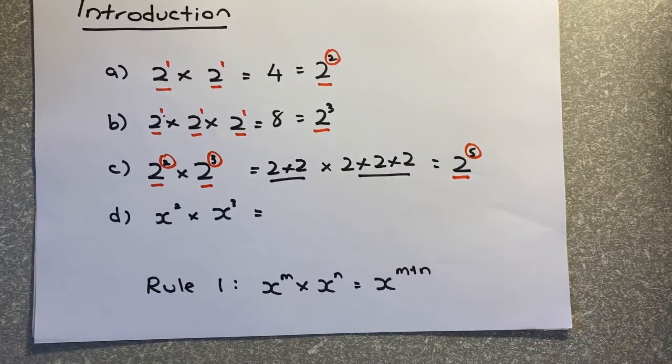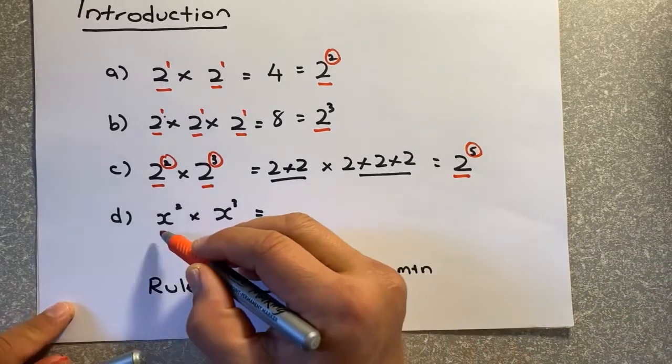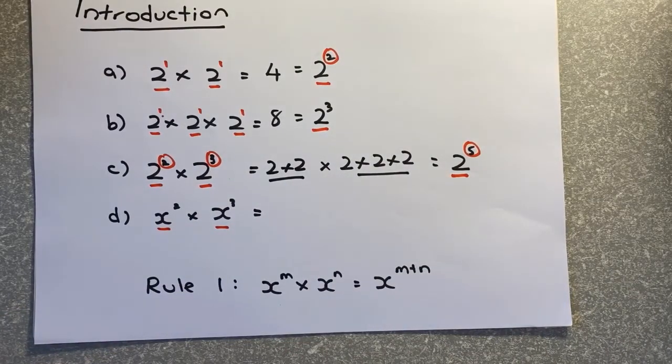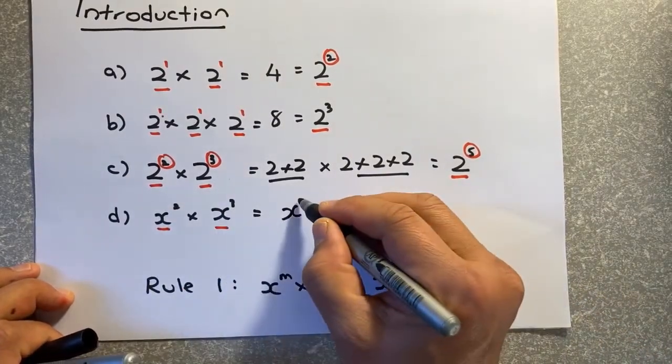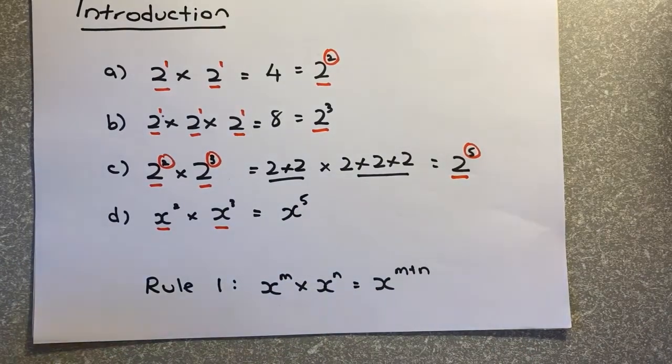So instead of 2 and numbers, in algebra, we represent numbers with the letters of the alphabet. In this case, you have x squared times x cubed. What do you do? The x remains, so x will still remain, and the next step, you just add 2 plus 3, and that will give you 5. So that is the basic of multiplication of algebraic expression.